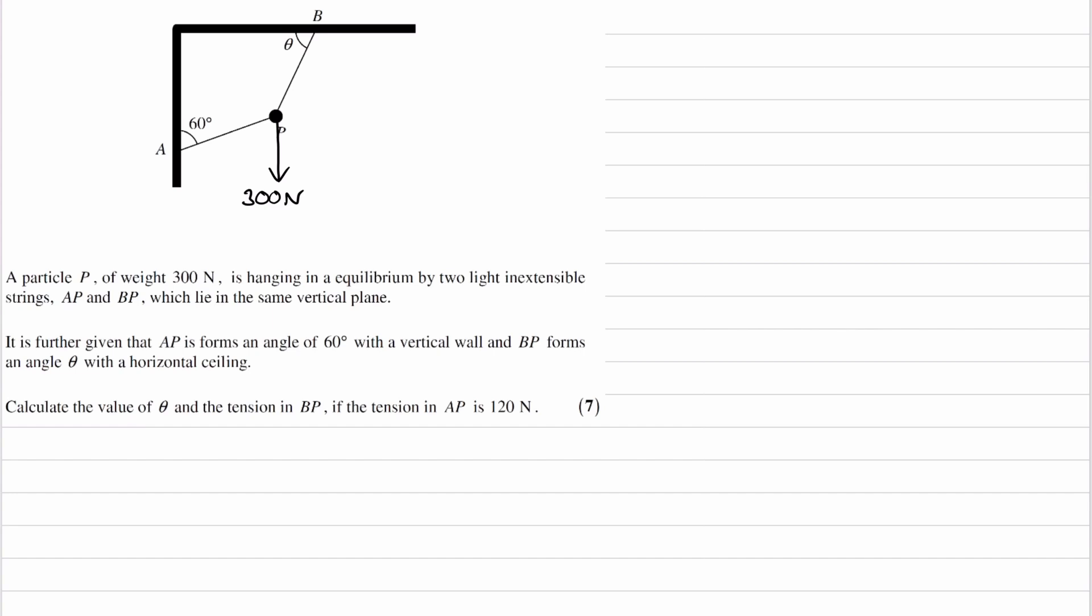It is further given that AP forms an angle of 60 degrees with the vertical wall. We have that on our diagram. And BP forms an angle of theta with the horizontal. We also have that on our diagram.